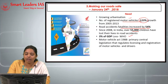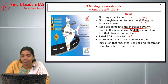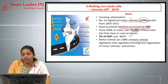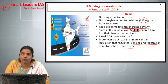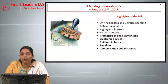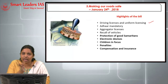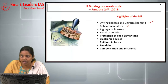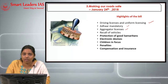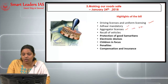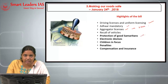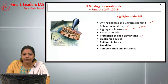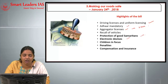The Motor Vehicle Act 1988 is the primary central legislation regulating licensing and registration of motor vehicles and drivers, but it is not up to the mark. The Motor Vehicle Amendment Bill 2017 highlights include: uniform driving licensing, Aadhaar mandatory for all licensing, aggregator licenses for cab service providers like Uber, recall of vehicles, protection of Good Samaritans in road accidents, use of electronic devices for road safety, a focus on children — the first transport legislation to do so — increased penalties, and improved compensation and third-party insurance.